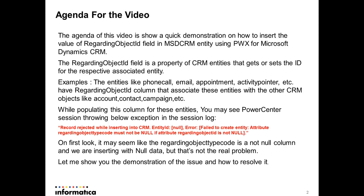The regarding object ID field is a property of a CRM entity that gets or sets the ID for the respective associated entity. For example, entities like phone call, email, and appointment activity pointer have a regarding object ID column in their definition, which associates these entities with other CRM objects like account, contact, campaign, etc.